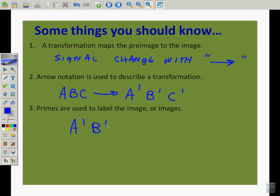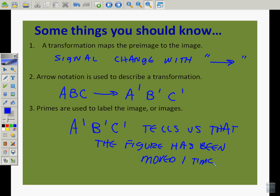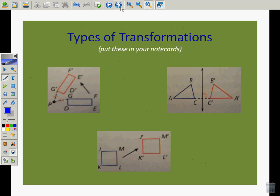Primes are used to label the images. A prime, B prime, C prime tells us that the figure has been moved once. A single prime tells us it's been moved one time. Double prime, triple prime, et cetera. So arrow notation shows us that it's going from ABC to A prime, B prime, C prime, and that tells us it's been moved a single time.